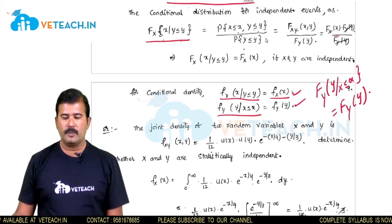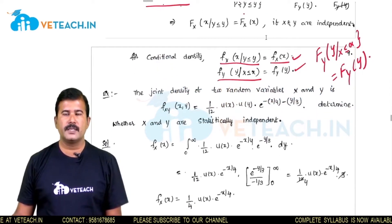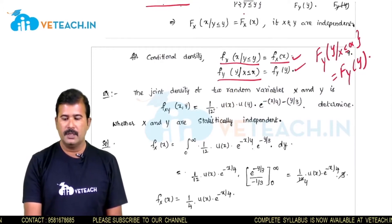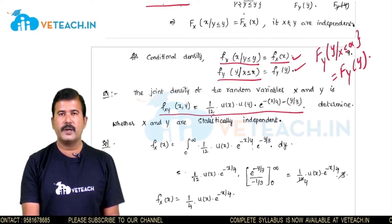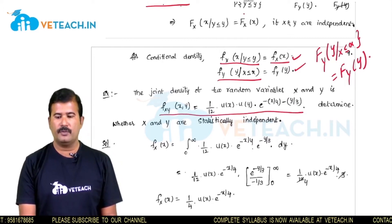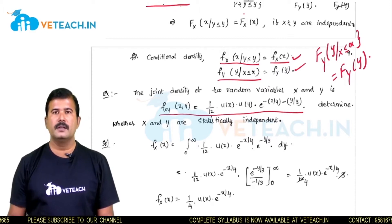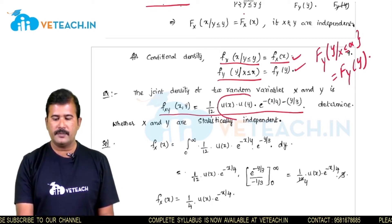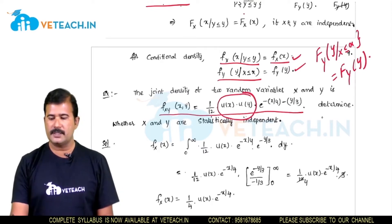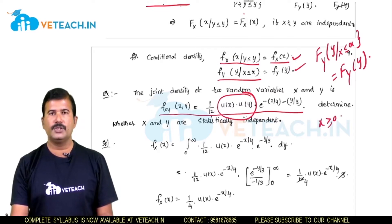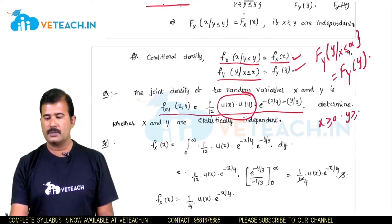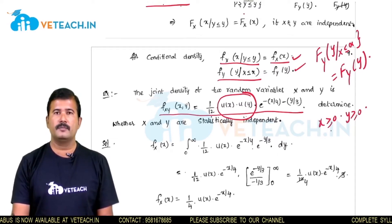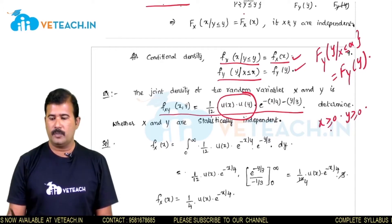Now, with one problem we will check — from the given density function — how to verify whether x and y are independent random variables. The joint density function is given as (1/12) · u(x) · u(y) · e^(−x/4 − y/3). No explicit limits are given for x and y, but the density function itself contains u(x) and u(y), meaning x ≥ 0 and y ≥ 0. The unit step function is valid for positive values.